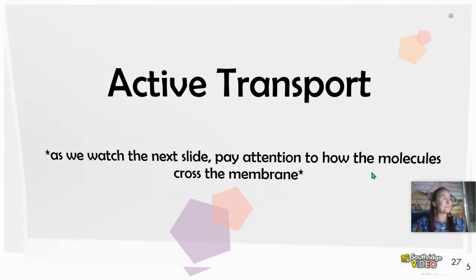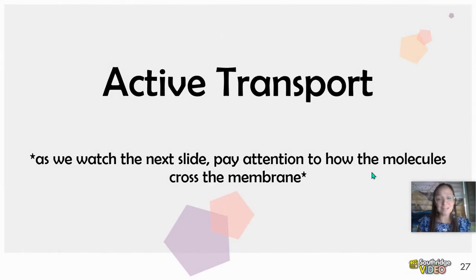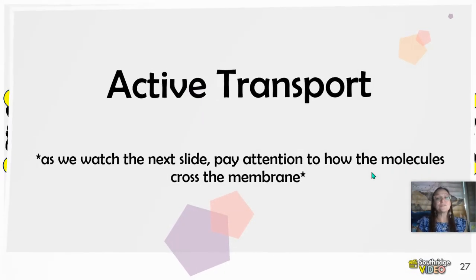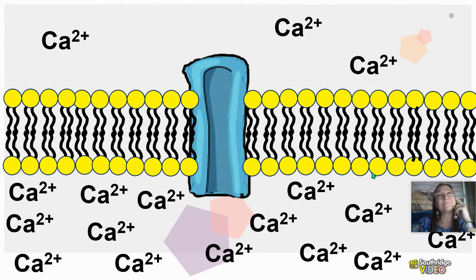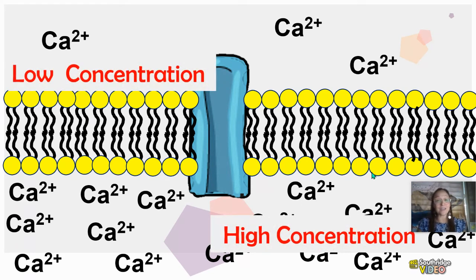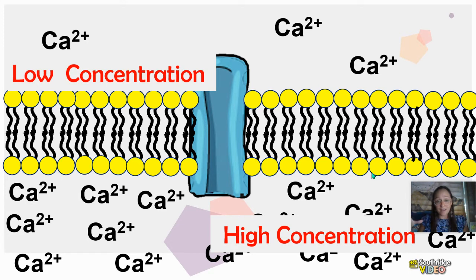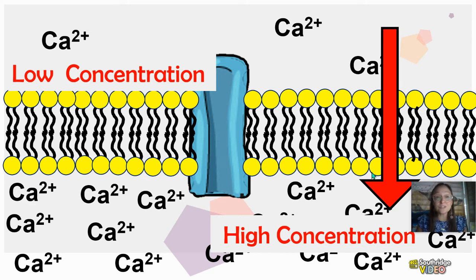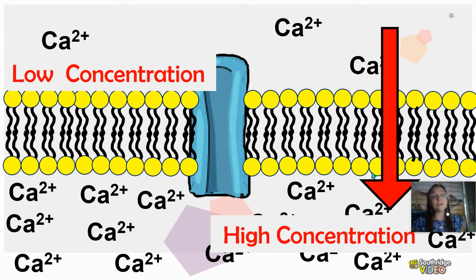Now let's look at our last type of transport: active transport. The name suggests it might use energy. Here we have a high concentration of calcium within the cell and a low concentration outside. Sometimes a cell may have a high concentration of an ion but still need more — and therefore molecules would have to move from a low concentration to a high concentration. That can't happen just due to random collisions. This is where energy is required.